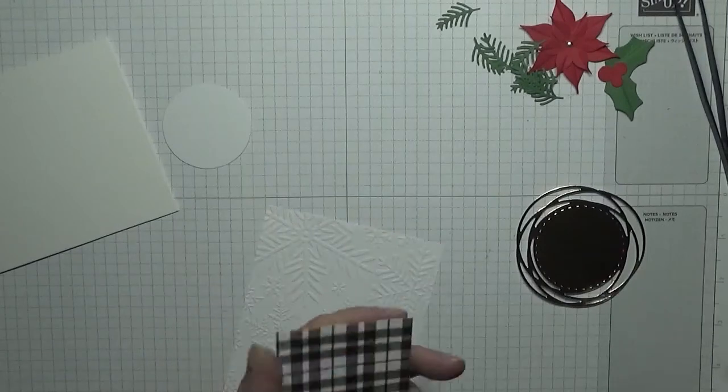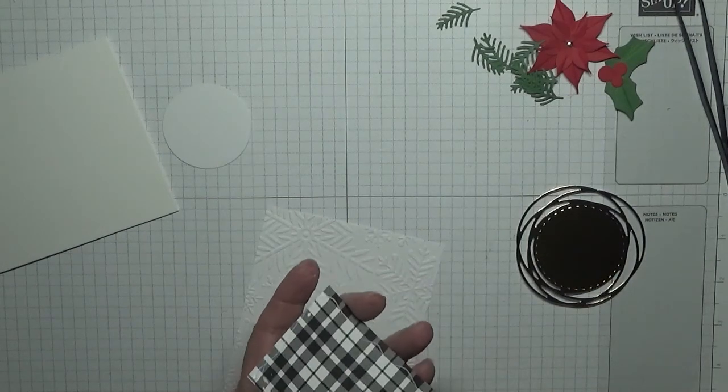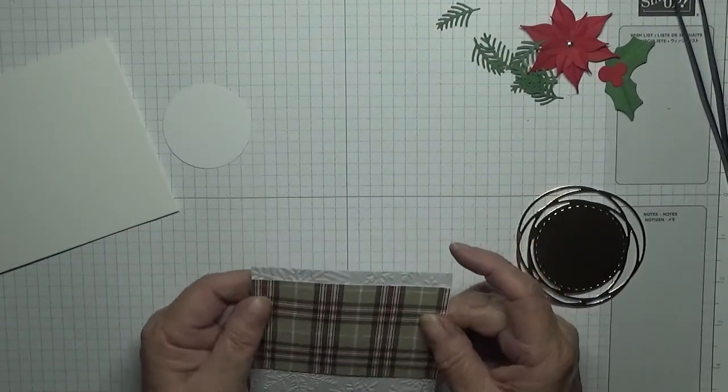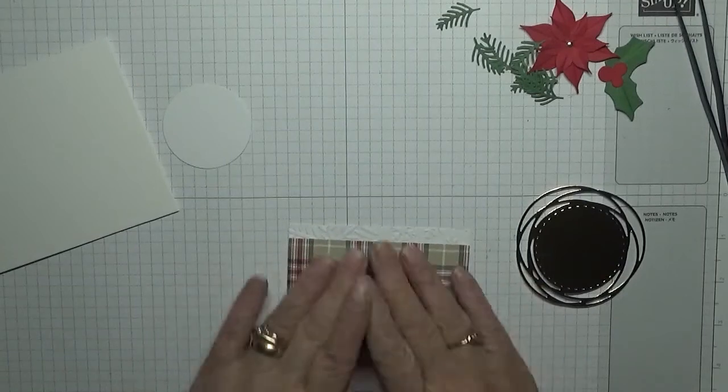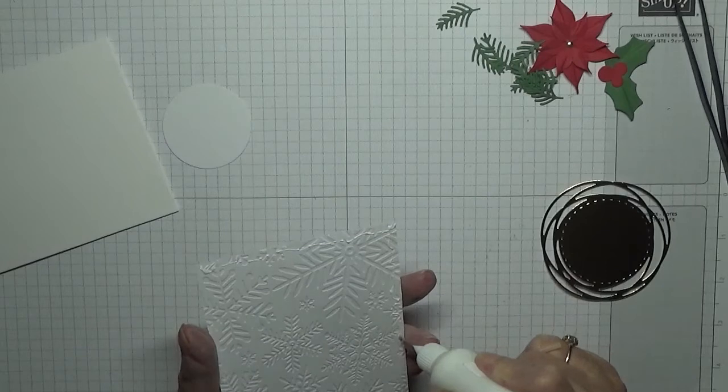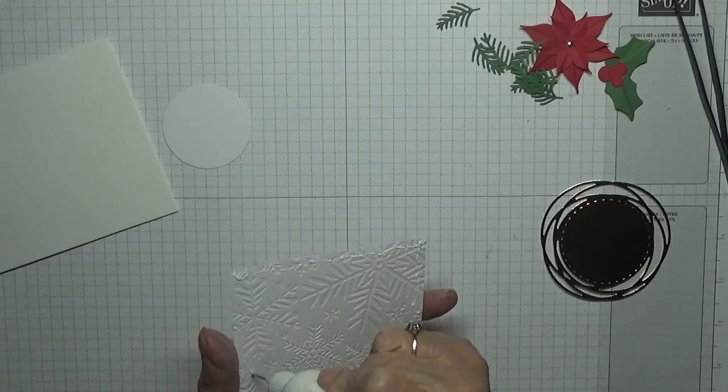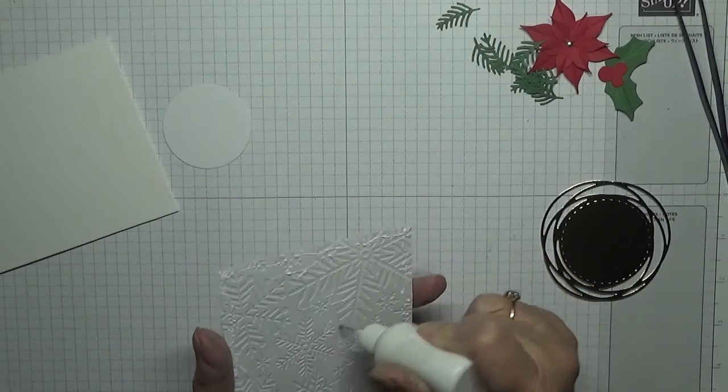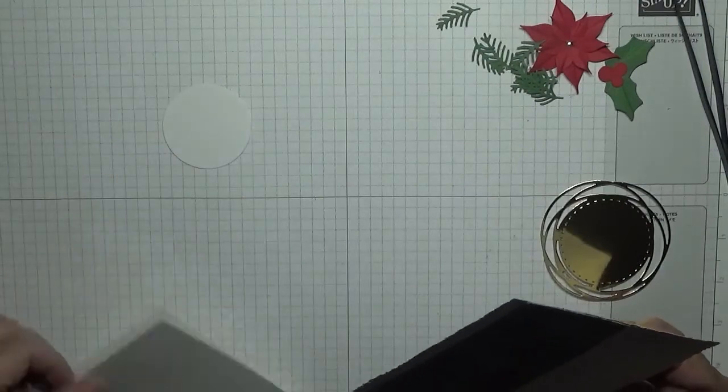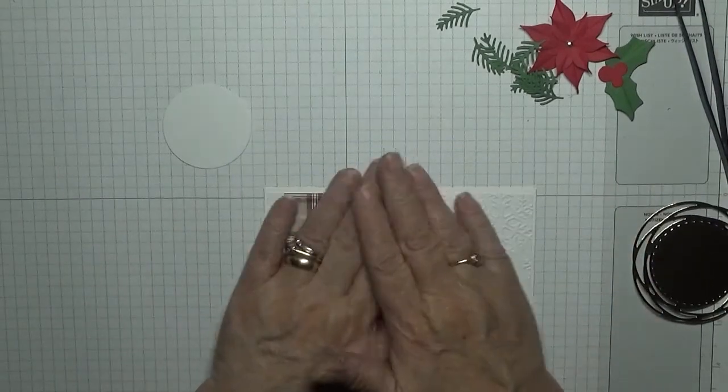Once I've done all this, I'm going to stick the tartan down, and I'm going to leave a gap at that end. And we're going to stick this on our card piece, making sure I get plenty of glue on it because it's embossed. Put this on like that.